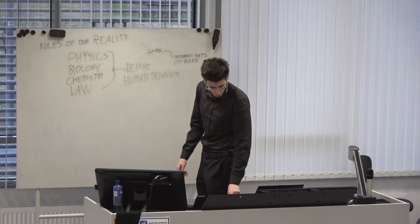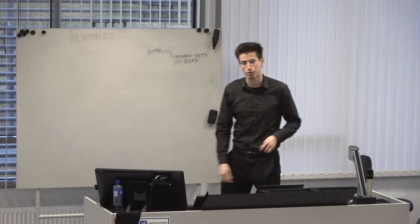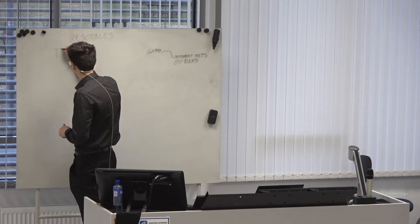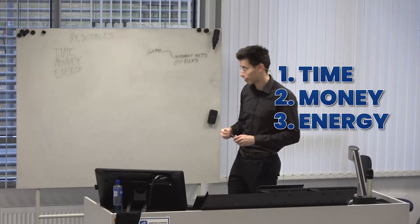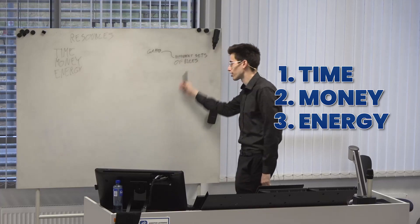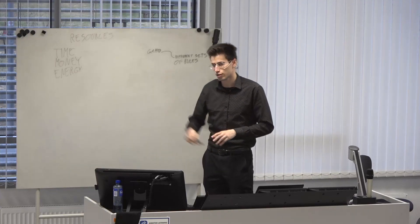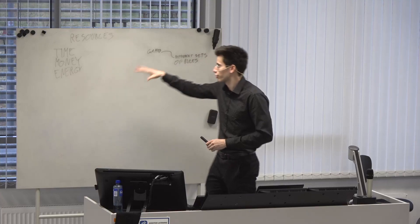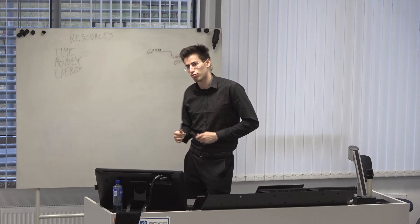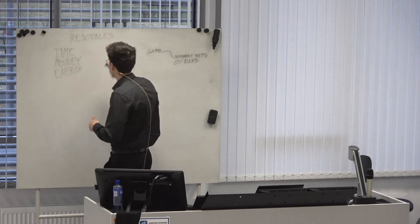The next thing we should think about before I get into the seven resources of reality are resources. To give you an example of most of the resources we are quite familiar with, they are the big three: time, money, and energy. These are the big three that we're quite familiar with. It turns out that these resources are also used in the games that we play.